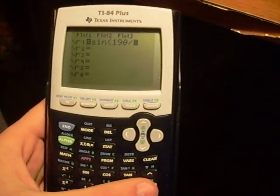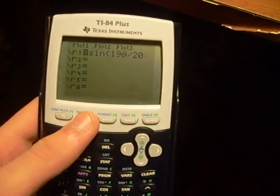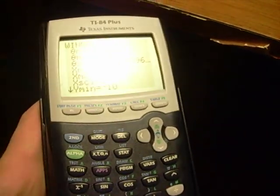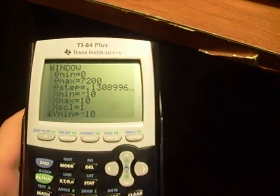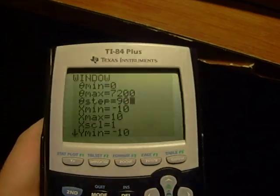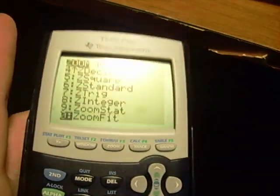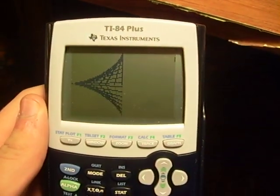sine of 19 theta divided by 20, and then hit window, set the theta maximum to 7,200, set the theta step to 90, hit zoom, and then zoom to fit. It'll take a couple seconds to process, but you get that.